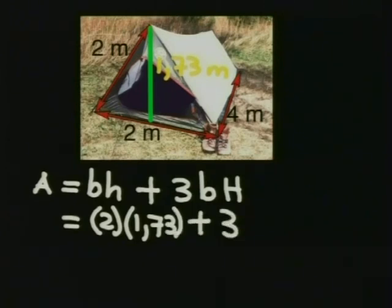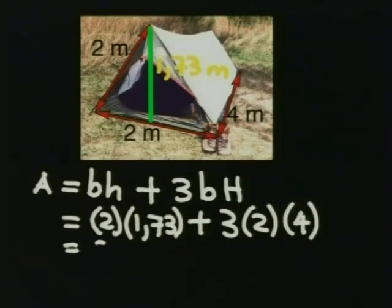Plus 3 times the base of the rectangle, which is 2 meters, times by the height of the rectangle, which is 4 meters. And this gives us 3.46 plus 24.